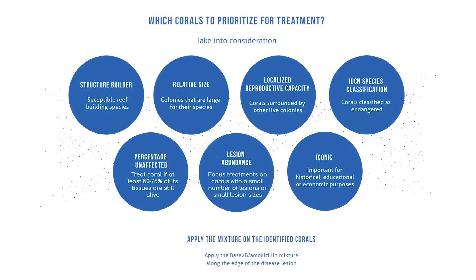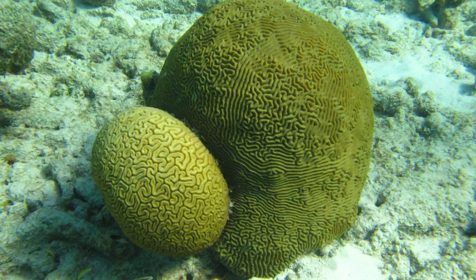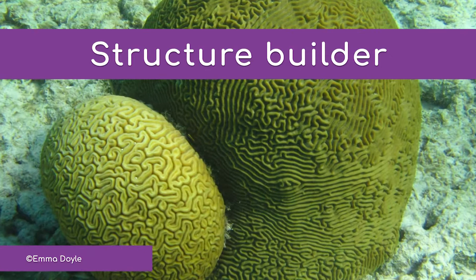Because it may be difficult to treat all diseased corals, there are criteria that you can consider to determine which corals to prioritize. Consider the following. What species are they? Some susceptible species, such as brain, star, and starlight corals, contribute substantially to reef building, so they may need to be prioritized.